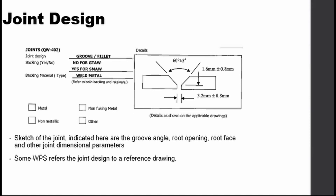The WPS also indicates the joint design — this is a sketch of the groove design, angle, root opening, root face, and other dimensional parameters. Some WPS documents just refer this to a reference drawing, so if the work is contracted out with a job specification, the owner or design engineer might provide this as a reference drawing. Don't worry if the WPS does not have this indicated directly, as long as it is referred to in a document.